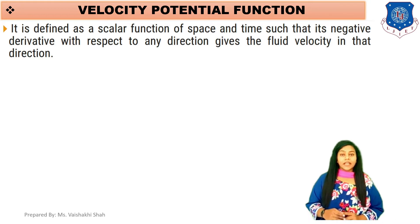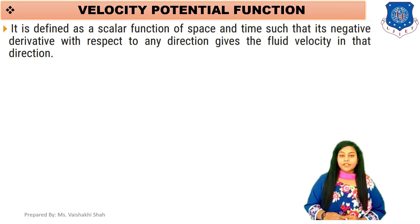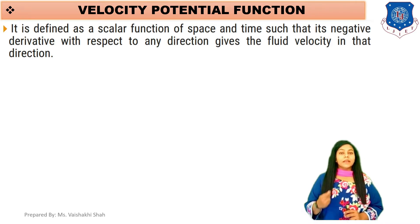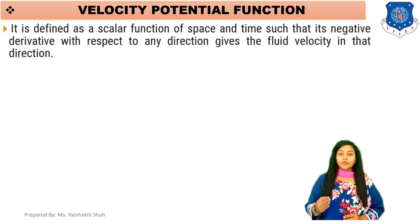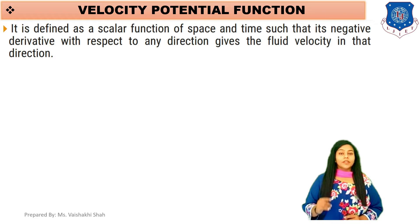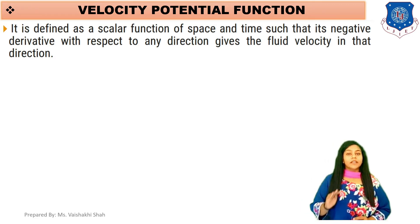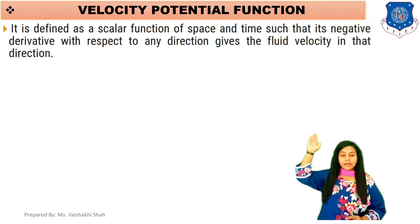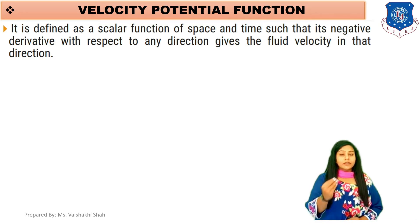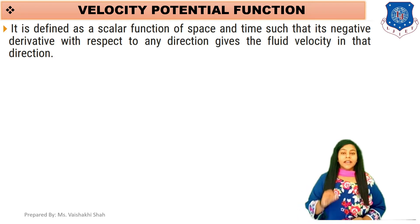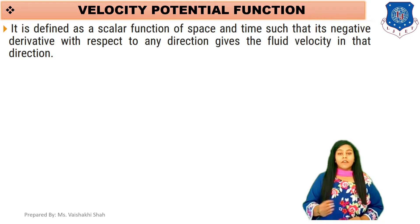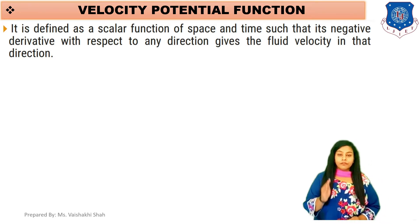In the last lecture we derived the continuity equation for 3D flow. The continuity equation was: del u by del x plus del v by del y plus del w by del z equals to 0. In that equation, u is the velocity in the x direction, v is the velocity component in the y direction, and w is the velocity component in the z direction. As per the definition, velocity potential function gives velocity in that direction through its negative derivative, so velocities are u, v, and w.